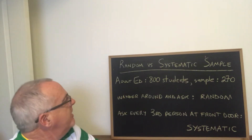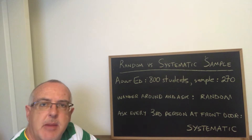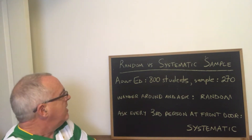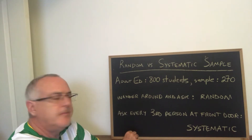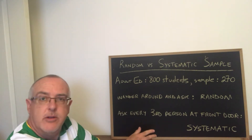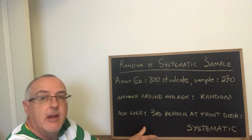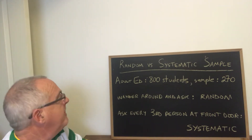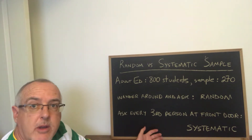Today's Daily Dose of Math is about random versus systematic sampling. I have an example of an adult ed school — it has 800 students, and we've decided to ask a sample of 270 of those students some questions. There's more than one way that we can do this.